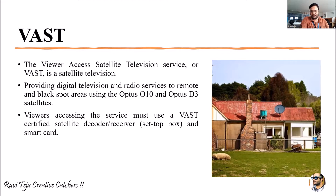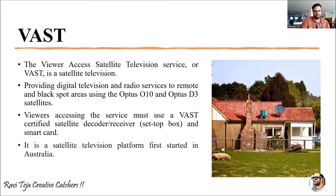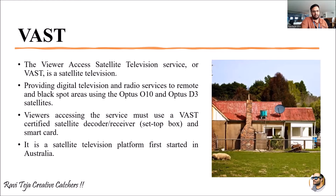VAST was first started in Australia as a trial and later spread into several areas throughout the world. Nowadays it is much more commonly known as a DTH or direct-to-home TV connection, which we see everywhere.